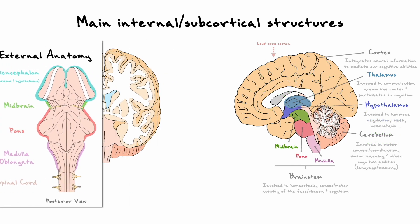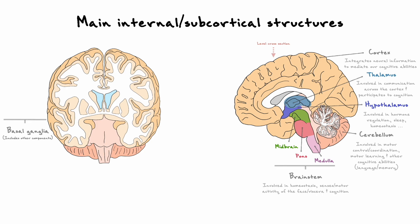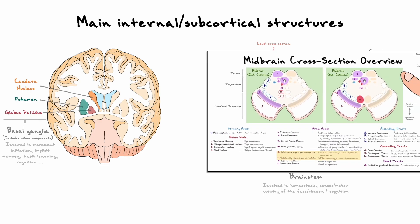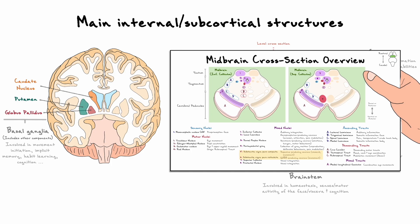The next important structure I want to point out is the basal ganglia. The basal ganglia is a collection, or circuit, of nuclei that work together to control movement initiation. This circuit is also involved in some forms of implicit memory, habit learning, as well as other diverse aspects of cognition. Most of the components of the basal ganglia can be best appreciated in the cross-section, where we can find the caudate nucleus, the putamen, and the globus pallidus. In addition, the basal ganglia is also composed of the substantia nigra, a particular nucleus in the midbrain that we came across in our discussion on the brainstem.